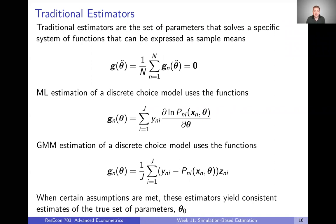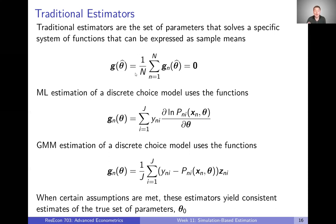We can think about these traditional estimators — whether it's maximum likelihood, method of moments, or generalized method of moments — as being the set of parameters that solves a specific system of functions expressed as a sample mean. There's going to be some function g sub n at the individual level, and we average that over the entire sample of n individuals to get function g. Our estimator is the set of parameters that makes that g function equal to zero.